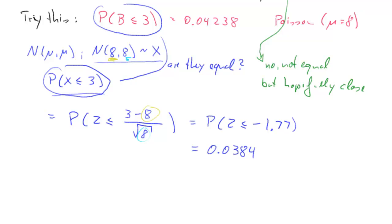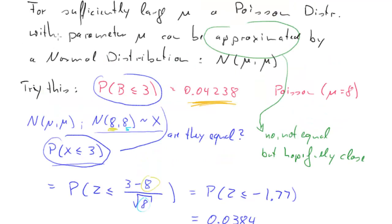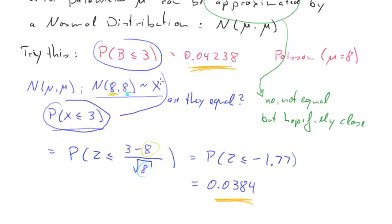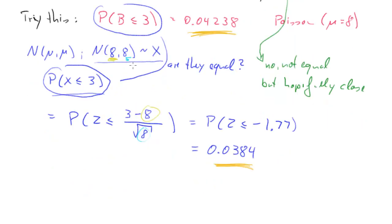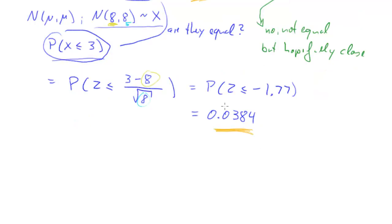So now we can see that these two values are really in the same ballpark. The correct Poisson value is 0.04238 (about 4.2%), and the normal approximation gives 0.0384 (3.8%). They are similar but not exactly the same. Note that I said 'sufficiently large mu' above — it turns out that 8 is possibly not sufficiently large yet to be really, really accurate.